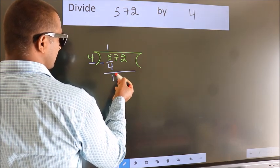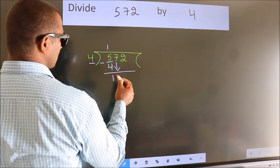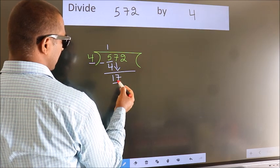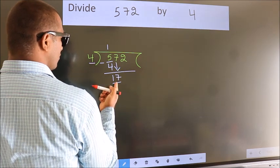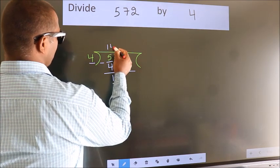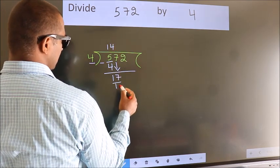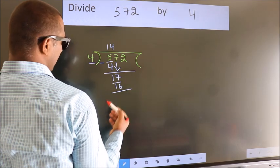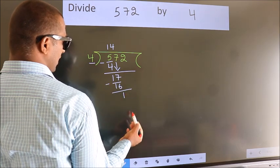After this, bring down the beside number. So 7 down. So 17. A number close to 17 in 4 table is 4 fourths 16. Now we subtract. We get 1.